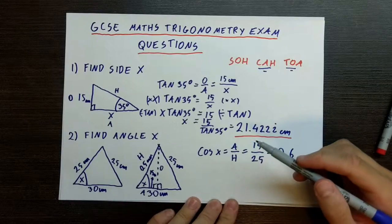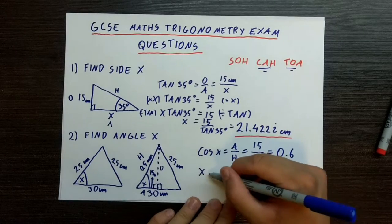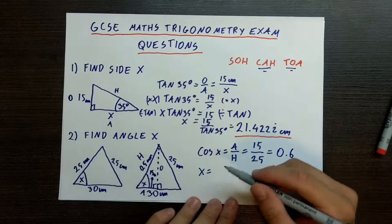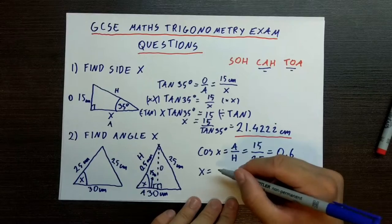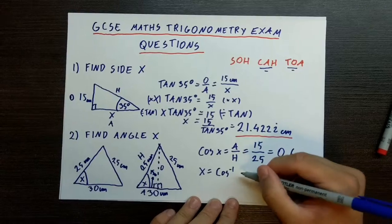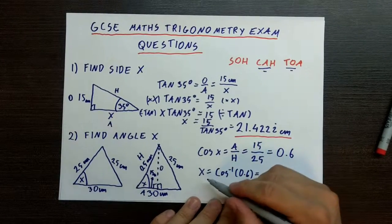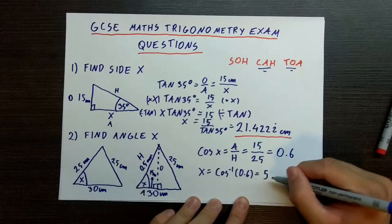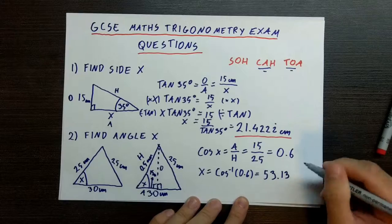So cosine x is equal to adjacent over hypotenuse, which is equal to 15 divided by 25. If we divide these through, that gives us 0.6. So cosine x is equal to 0.6. Now in order to find out what x equals, we need to use the inverse function of cosine — you press shift on a calculator to access the inverse function. So x is equal to inverse cosine of 0.6, which gives you an answer of approximately 53.13 degrees.